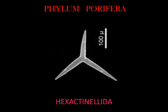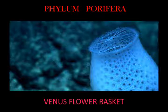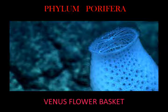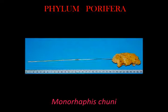Iconic hexactinellids include the Venus flower basket, which often encloses a pair of shrimps inside its body and was used as a bridal gift in ancient Japan, and Monorhaphis chuni, which anchors itself in the soft deep-sea floor with a single giant spicule up to 3 meters long. To date there are 600 described species, certainly an underestimate given their remote habitats and very small number of taxonomic experts.